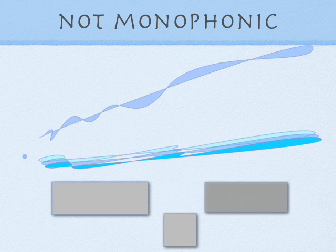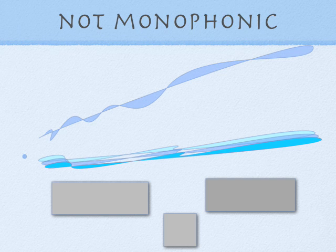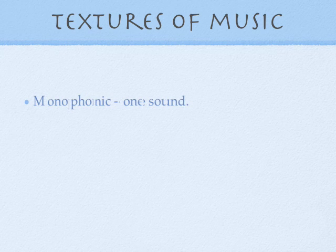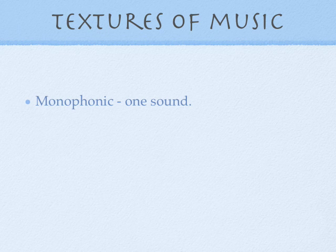To end this podcast, let's review. Monophonic means one melody line being played — or mono, one, phonic, sound. One sound only.